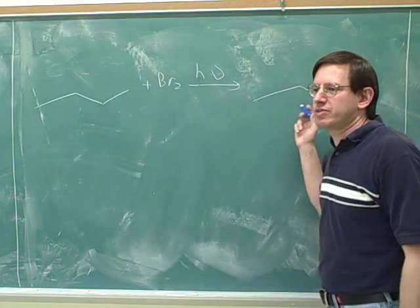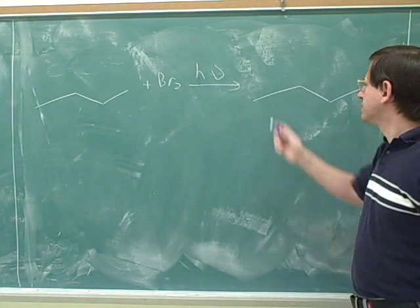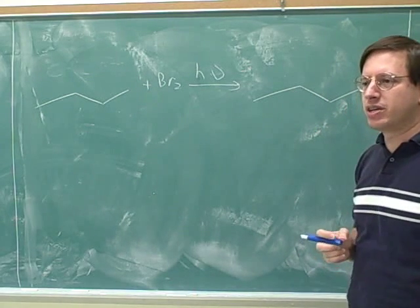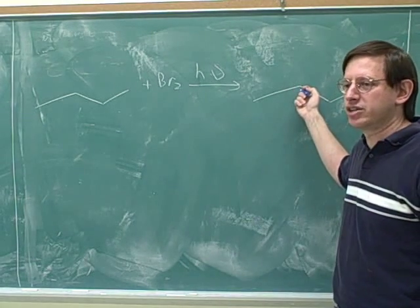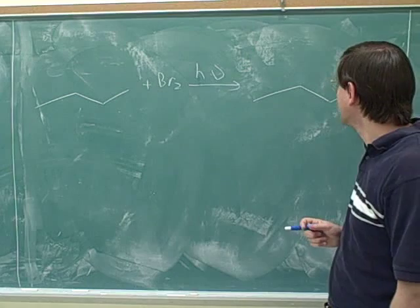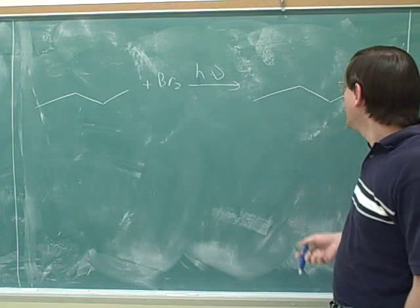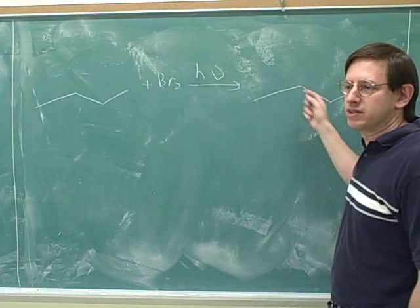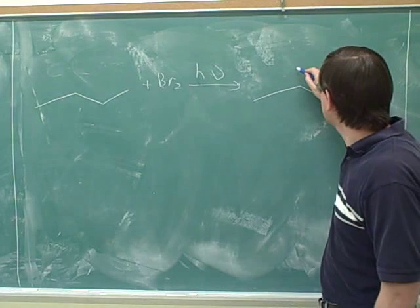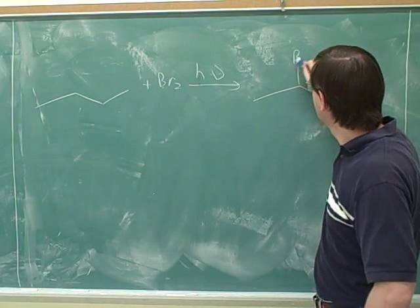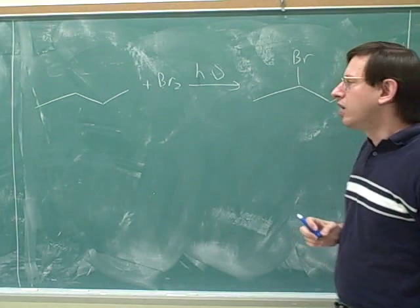Now we have some regiochemistry here, because there's more than one region that can react. Well, is this going to take place at the more or less substituted carbon? More. And the more substituted carbon. We should just know that radical halogenation occurs at the most substituted carbon. Bromine is very selective. So we can expect that this is going to go at our secondary carbon. And it doesn't matter which secondary we use, because this is a symmetric molecule. So I'm just going to put this bromine here. And remember, it's really replacing one of the hidden hydrogens.